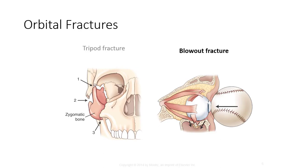A tripod fracture occurs when the zygomatic bones are displaced from their articulations with surrounding cranial and facial bones. A blowout fracture can happen when an object hits the orbital bones and the eyeball with tremendous force anteriorly, causing pressure to build up within the orbit that thrusts the bones out laterally. These are common with motor vehicle accidents, baseballs and softballs, and fists or elbows, and are often accompanied by blood collection in the maxillary sinuses, so we try to include those in the upright views with a horizontal beam.